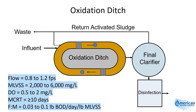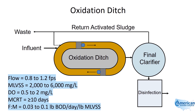The dissolved oxygen level is controlled by the depth of the water, which determines how deep the rotors and brushes go into the water to increase the exchange of oxygen through surface agitation. Dissolved oxygen levels are lowest just prior to the rotors, and the operator should maintain the dissolved oxygen at 0.5 to 2 milligrams per liter at this point.